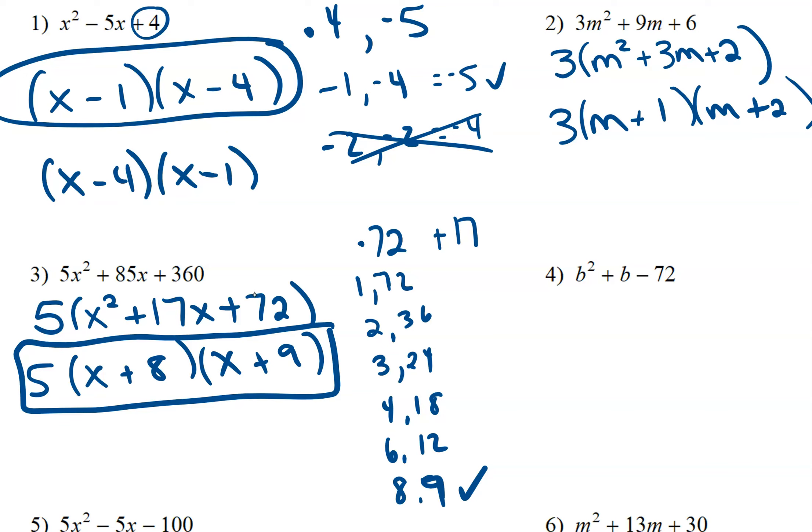Now this next one, we don't have a common factor, so we can go ahead and start with b and b. And again, we need factors of negative 72, but on the last one we had positive 72. So what if we just make one of each of those negative? Which of those factor pairs is going to give us a sum of 1? Because that's 1b in the middle. It's that last one, so it would be minus 8 and plus 9.